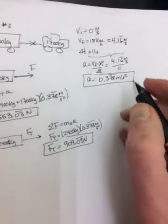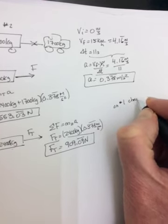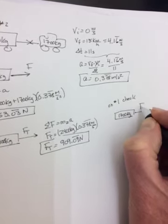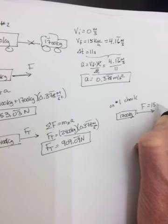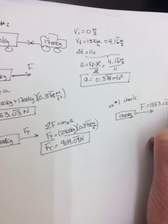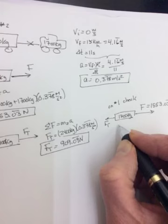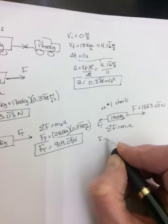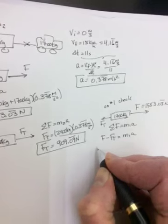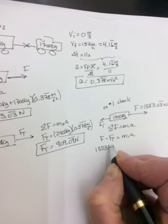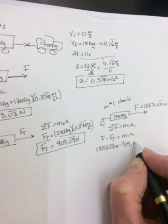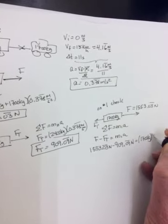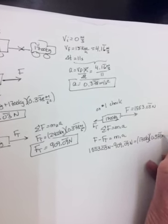And the 0.9 is repeating if you didn't round. That's the tension. Now we can look at on number one as our check. So number one is 1700 kilograms. Pulling this way is the force we found. That was 1553.03 repeating. Minus 909.09 repeating. Pulling back is the 909 that we just found. So we're going to do sum of the forces should equal M1 times A. So forward is positive. So F minus the tension should equal M1A. So 1553.03 repeating minus 909.09 repeating.